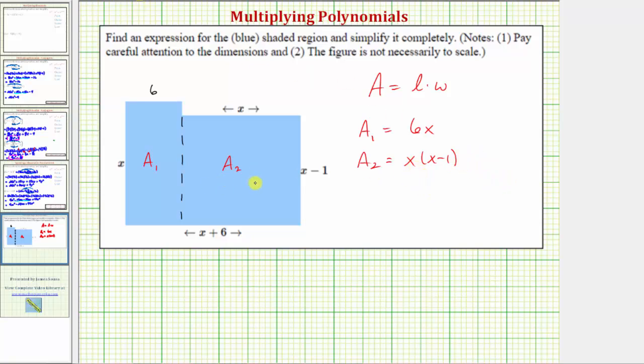Which means the total area of the blue shaded region, A, must be equal to six x plus x times the quantity x minus one. But we are asked to simplify this expression, so now we'll distribute and combine like terms. We have A equals six x plus x times x is x squared, plus x times negative one, that's negative x, or minus x.